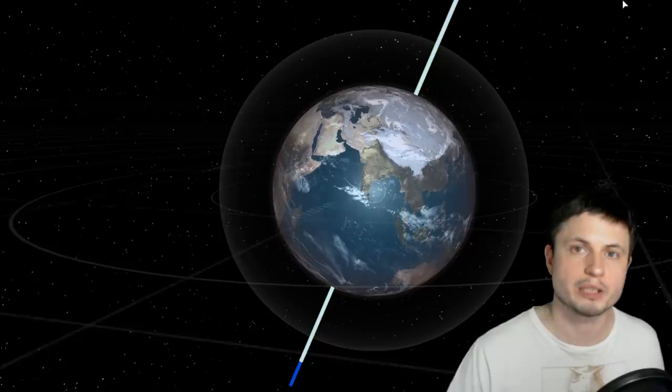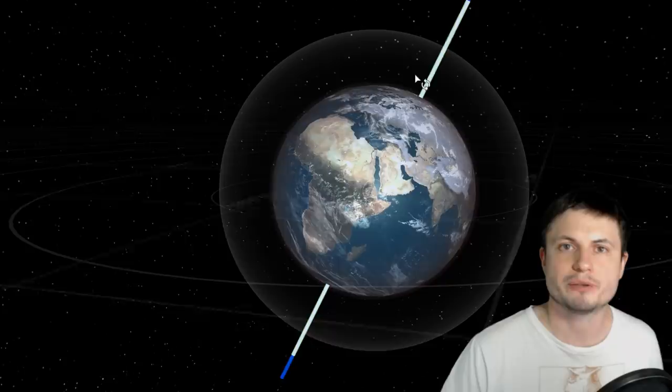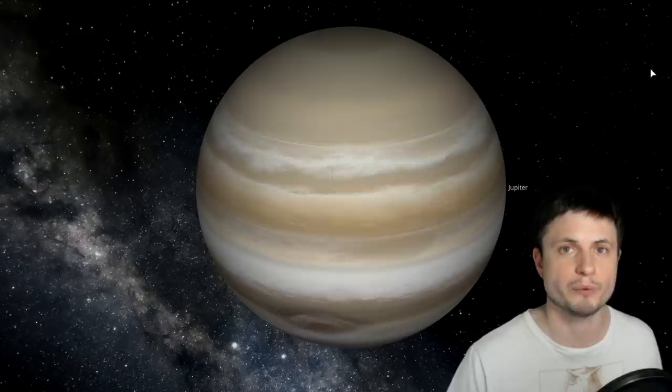But every 41,000 years the planet starts tilting a little bit. Basically it goes between about 21 degrees and about 24 and a half degrees. So this happens every 41,000 years. And to try to understand why this happens you just have to look around our solar system. Giant massive planets like Jupiter can easily influence the orbit of pretty much any planet in the solar system including of course Earth and even change their axial tilts and influence them in many other ways. So the axial tilt changes because of the planetary interactions.